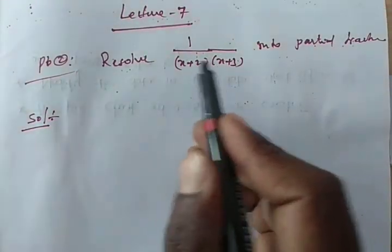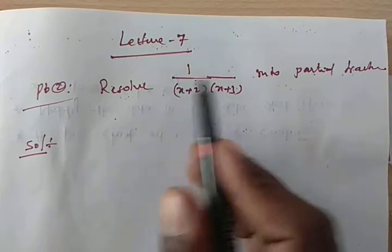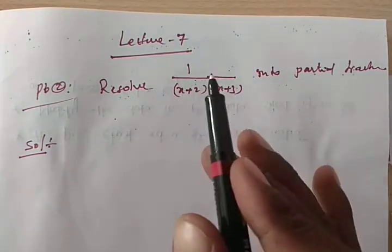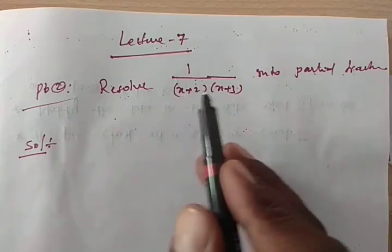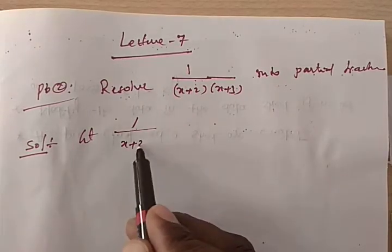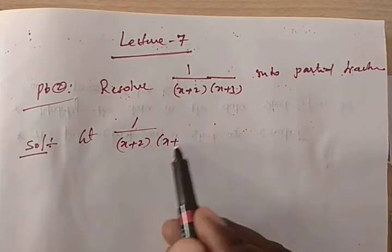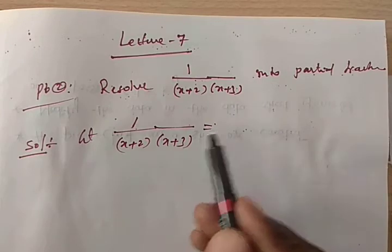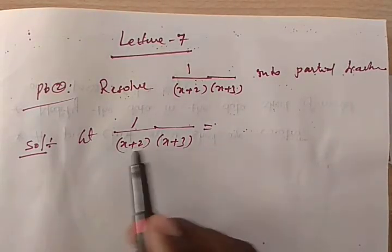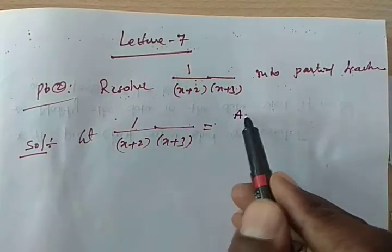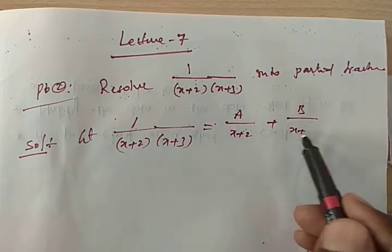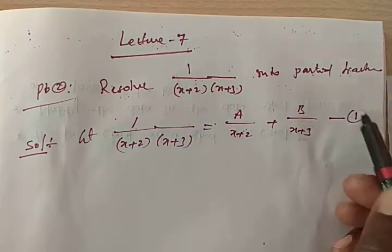So clearly the given fraction is a proper fraction, and this fraction belongs to Type 1 because the denominator contains distinct linear factors. So let 1 divided by (x+2)(x+3) be expressed as partial fractions. These two factors are distinct, so we write a constant over the first factor plus another constant over the second factor. Let's call this Equation 1.